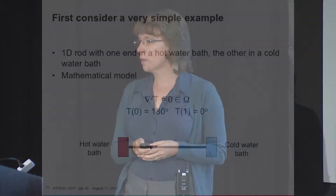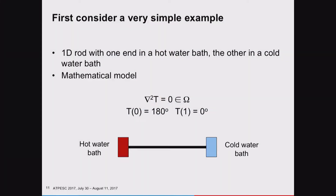To break it down, I'm going to take you back to your introductory numerical methods class—numerical methods 101. Consider a one-dimensional rod with two ends: one end in a hot water bath, the other in a cold water bath. What happens to that rod over time? The heat from the hot water bath diffuses through the rod, and you'll end up with a very linear representation of temperature along that one-dimensional rod.